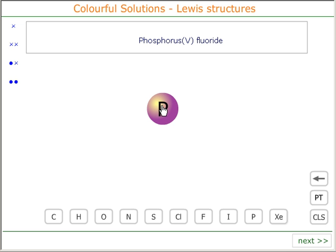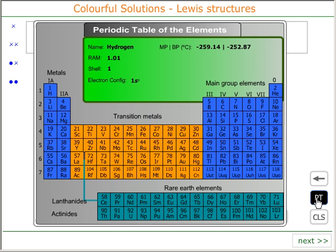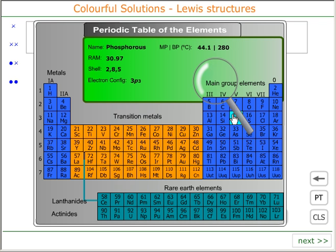Phosphorus is in group 5 of the periodic table, just underneath nitrogen. So we see Phosphorus has got 5 electrons in its outer shell.